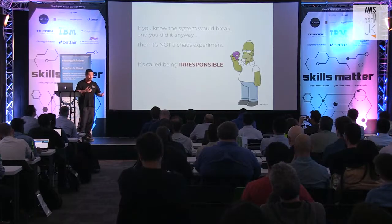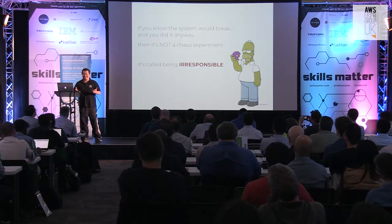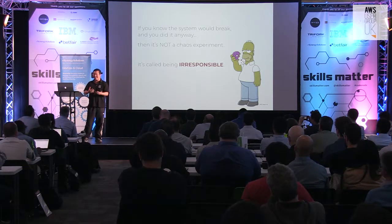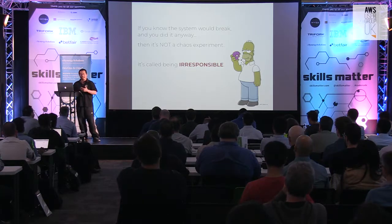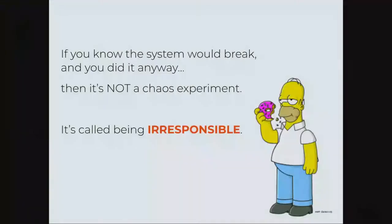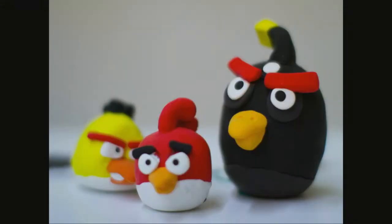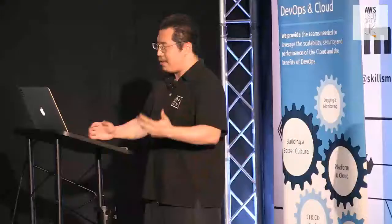If you know something is going to break and you do it anyway, you're not learning anything new, but also you're just being irresponsible and breaking things for the sake of it. You're going to hurt your user experience, and chances are many users may not even come back. So now you know you can handle it — how do you actually plan and execute this chaos experiment?